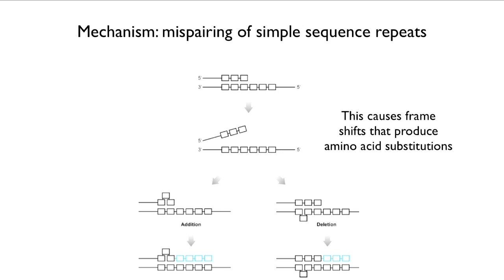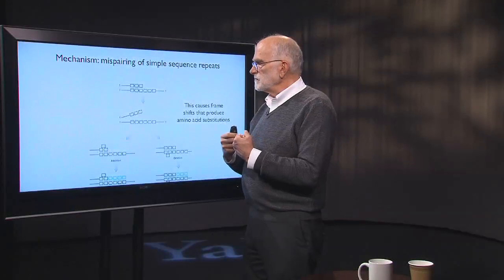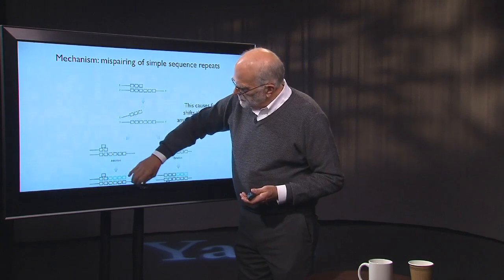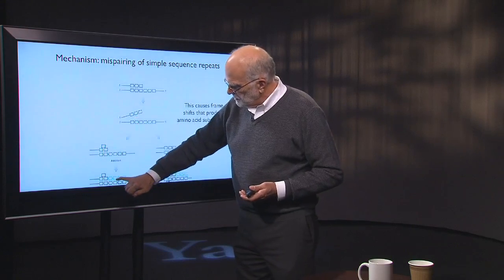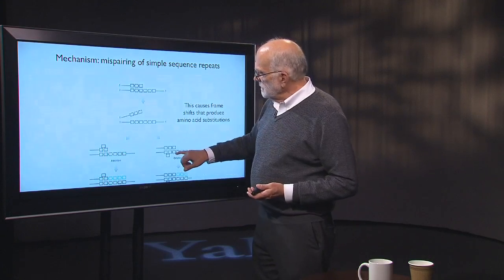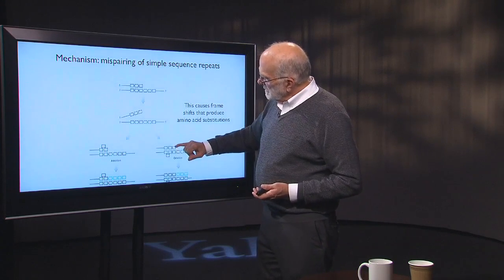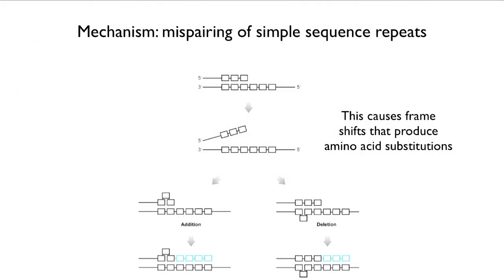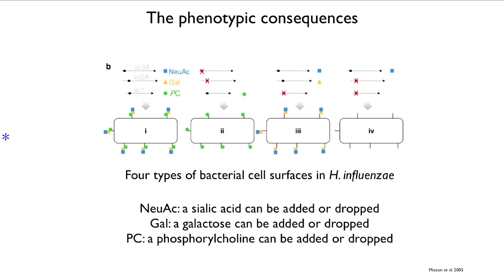This diagram shows that if you have a different number of sequence repeats, it becomes easy during replication to have a squinch — a little bend in the DNA — which means one nucleotide will be added. Or, if this is occurring on the other strand, one nucleotide will be deleted. That causes a frameshift, and the frameshift then produces an amino acid substitution. Some of the phenotypic consequences can be seen in Haemophilus influenzae.